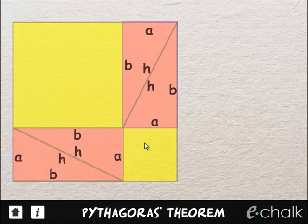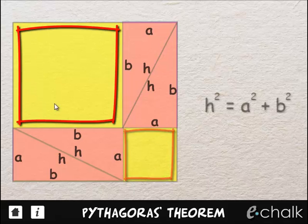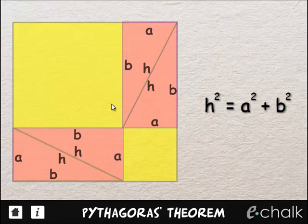But now we can see that H squared equals A squared plus B squared. And that's Pythagoras' Theorem.